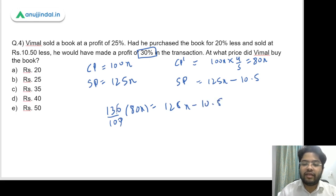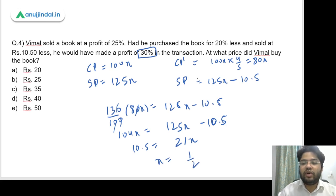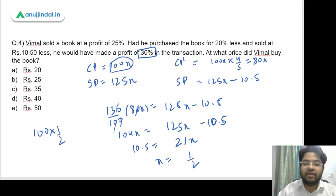So 130 by 100 of 80X equals 125X minus 10.5. Simplifying, 104X equals 125X minus 10.5. Bringing terms together: 10.5 equals 21X, so X equals 1 by 2. The original CP was 100X, so the price is 100 into 1 by 2, which equals 50 rupees. So option E is the answer.